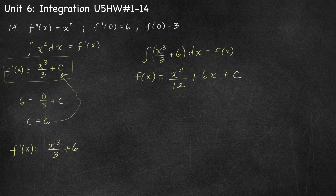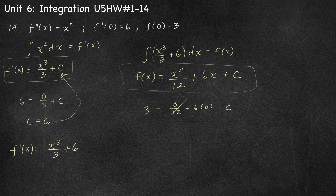Now I solve for c using f(0) = 3. Substituting x = 0: 0 over 12 plus 6 times 0 plus c = 3, so c = 3. Therefore f of x equals x to the power of 4 over 12 plus 6x plus 3.